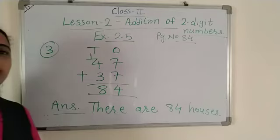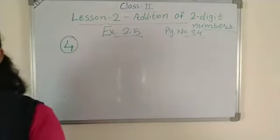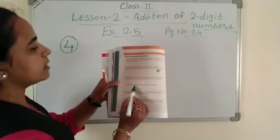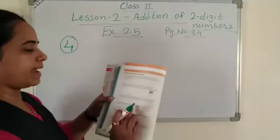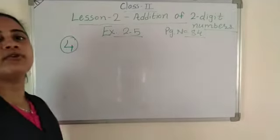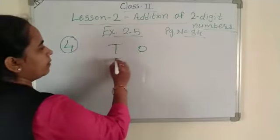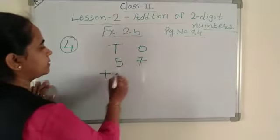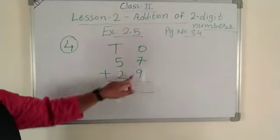Now continue with number 4. Open page number 84 and see question 4. Read: What is the total we get by adding 57 rupees and 29 rupees? Underline 57 and 29 rupees. We will add 57 rupees and 29 rupees.